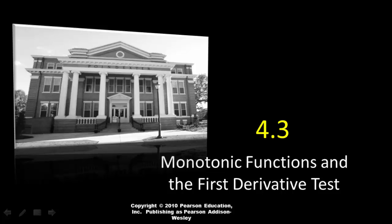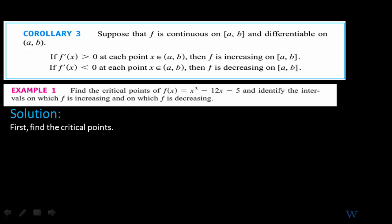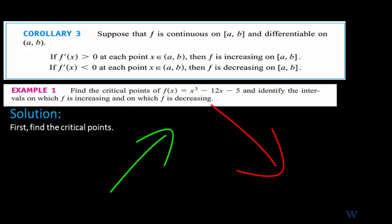Section 4.3: Monotonic Functions and the First Derivative Test. Let's start with Corollary 3, since this is a continuation of applications of derivatives. In particular, this will help us with the shape of the graph — finding whether the function is increasing or decreasing — and therefore we'll be able to locate local extreme values, like local min and local maximum.